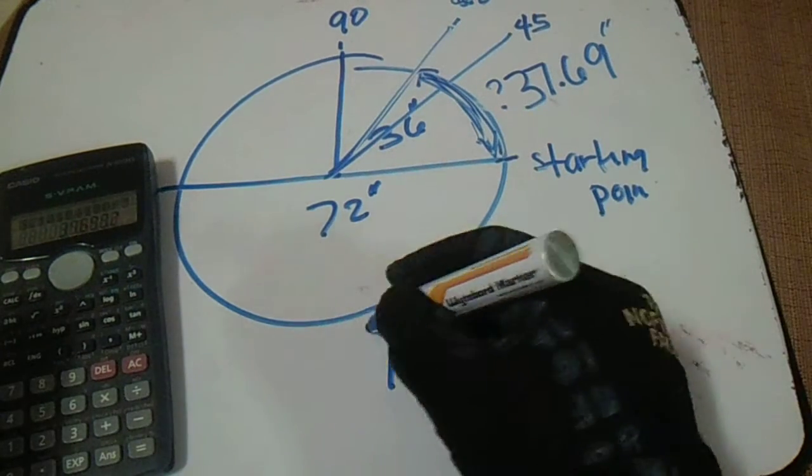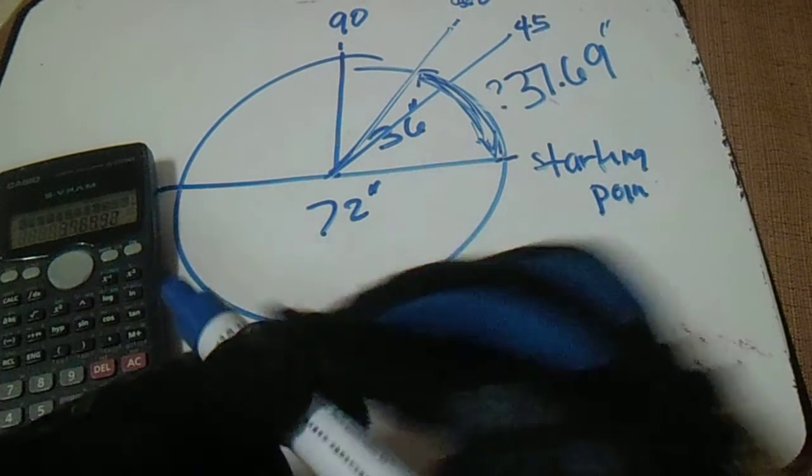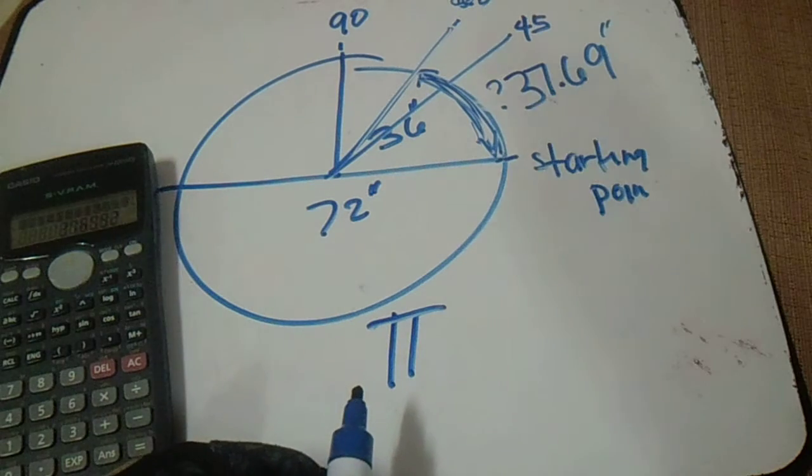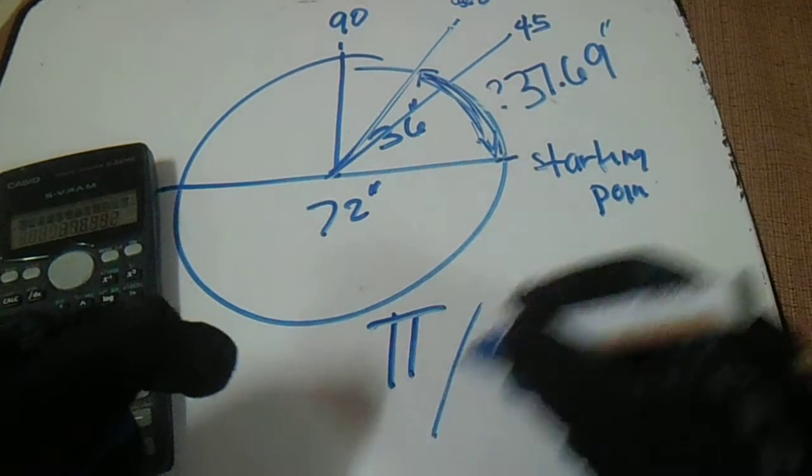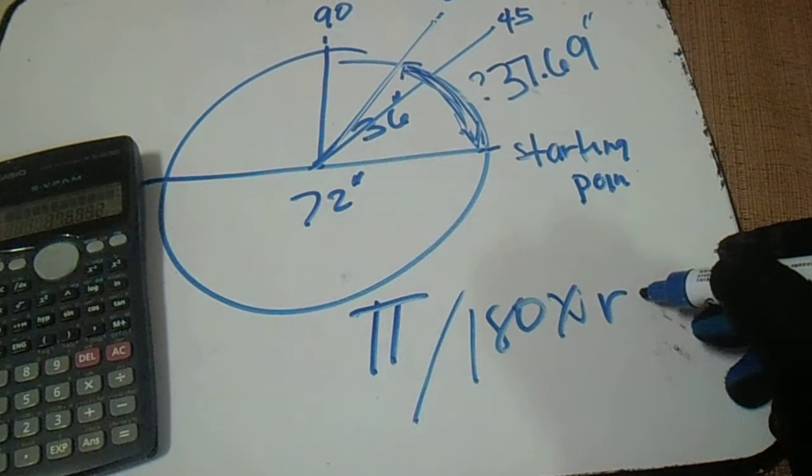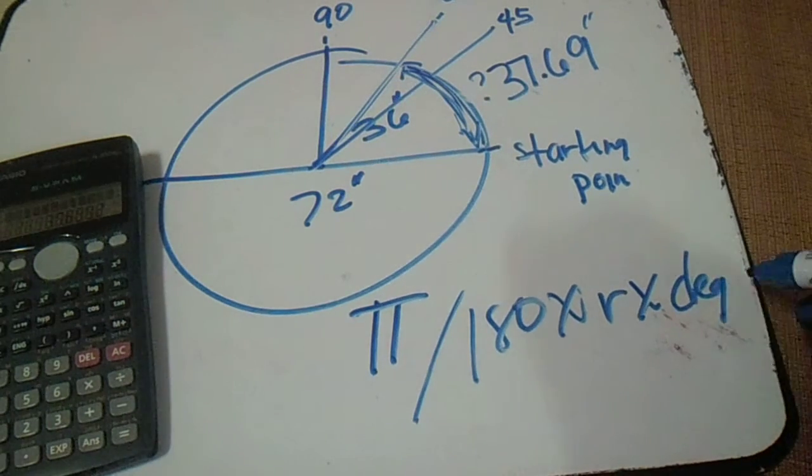And the formula: phi - our phi is 3.1416 - divide it by 180, multiply it to radius, multiply it to degrees.